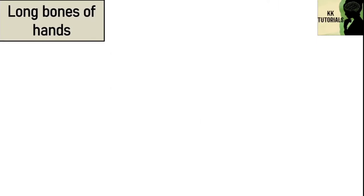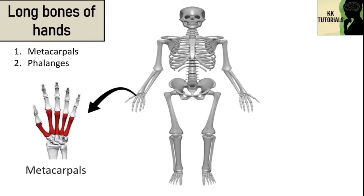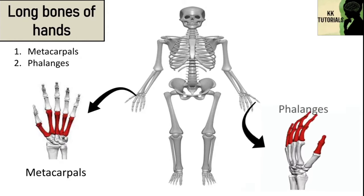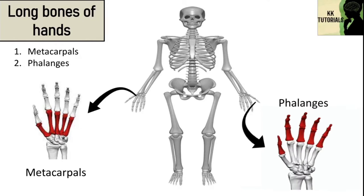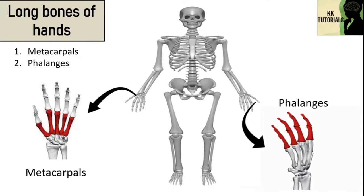When we talk about the long bones of hands, there are two types: metacarpals and phalanges. Metacarpal bones are analogous to metatarsal bones in the foot. There are three types of phalanges: proximal phalanges, intermediate phalanges and distal phalanges.